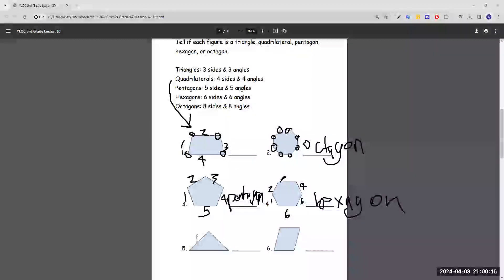Number five, one, two, three sides. And looking above, it's a triangle.